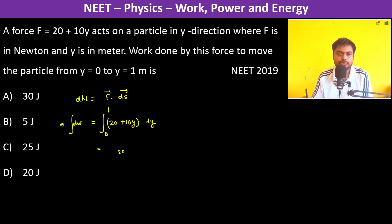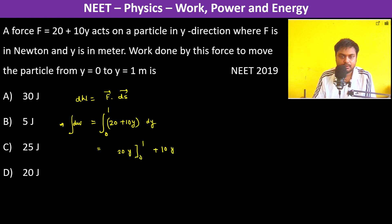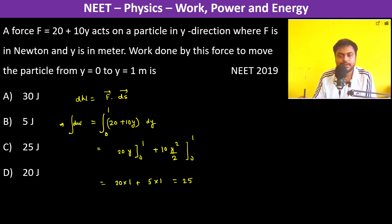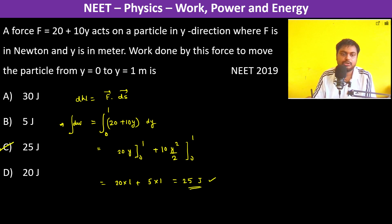Evaluating: 20y from 0 to 1 plus 10y²/2 from 0 to 1 equals 20 × 1 plus 5 × 1, which is 25 Joules. Therefore, the work done is option C, which is 25 Joules.